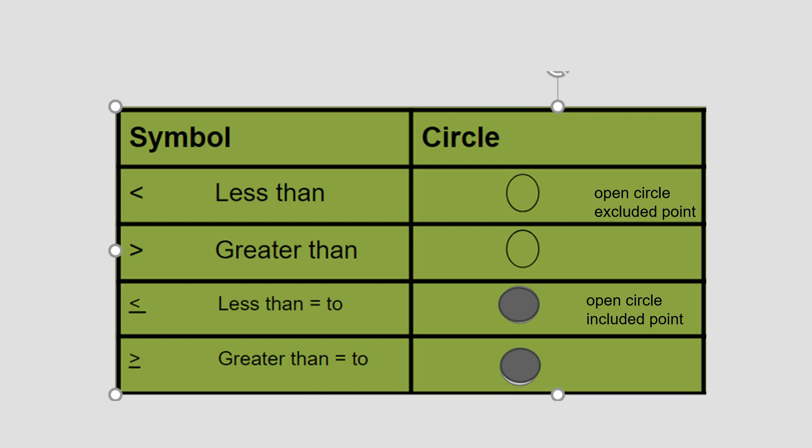Quick recap: when you have a strict inequality — either less than or greater than — you have an open circle to indicate that point is excluded. When you have an underlined inequality (greater than or equal to / less than or equal to), the point is included and the circle will be filled in.